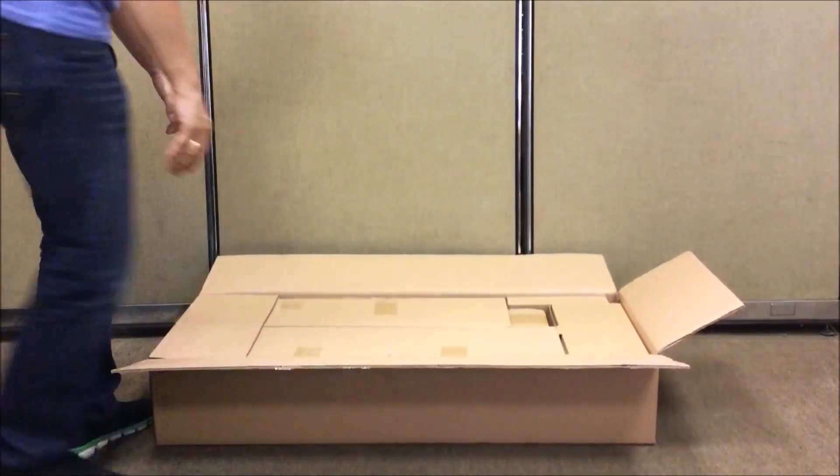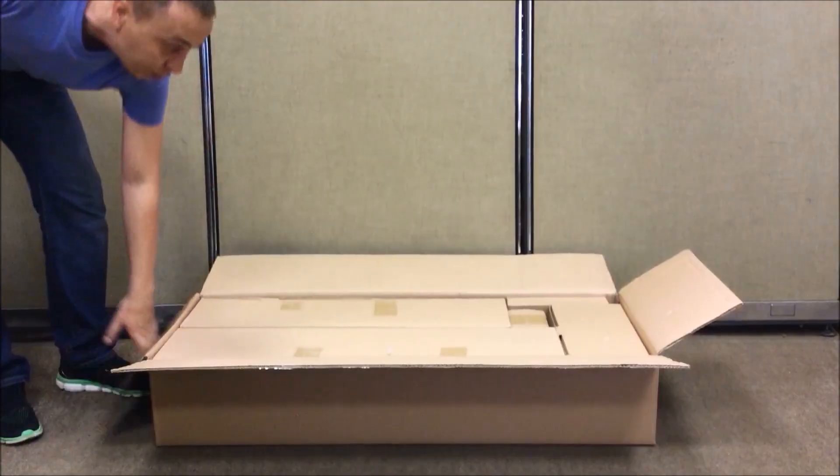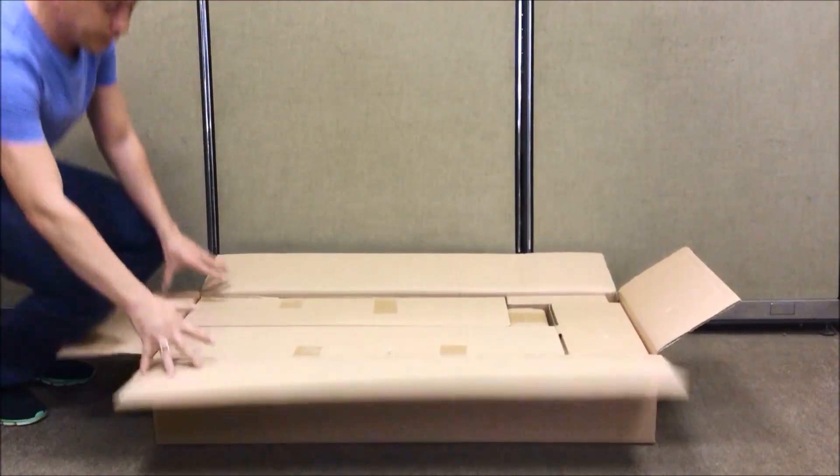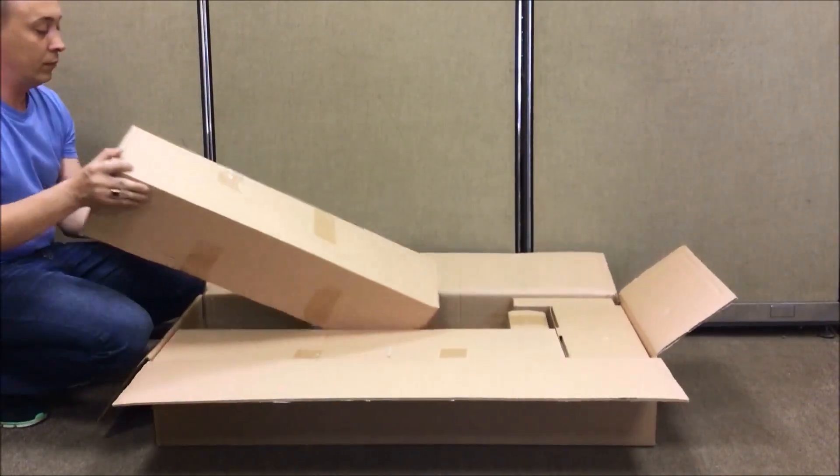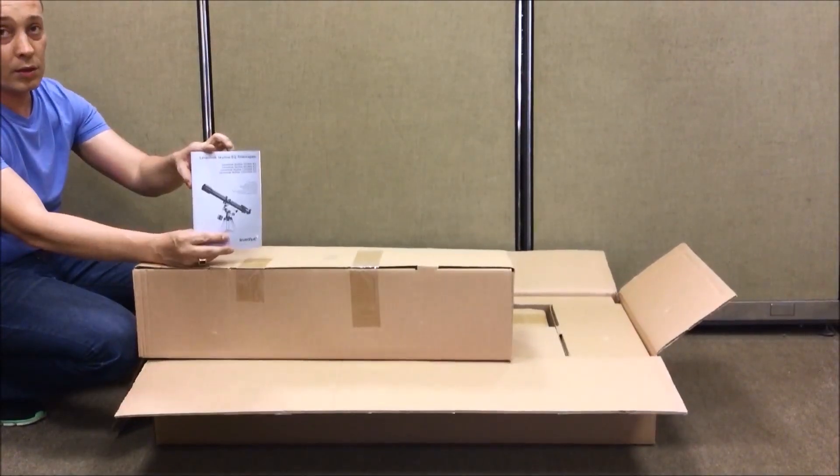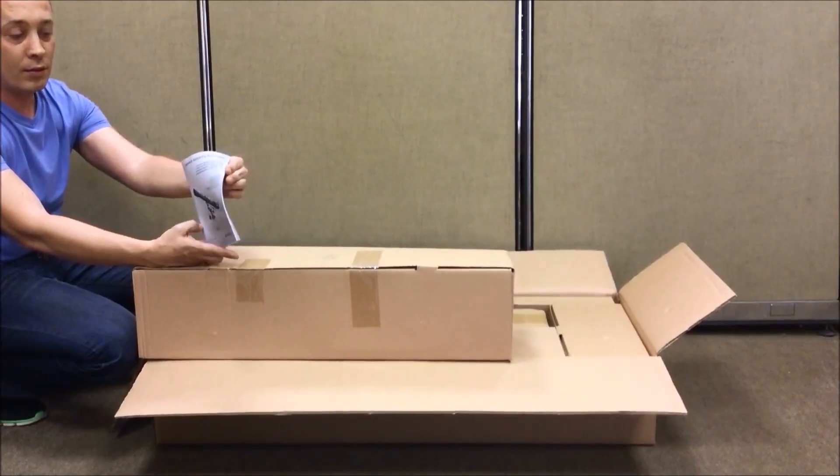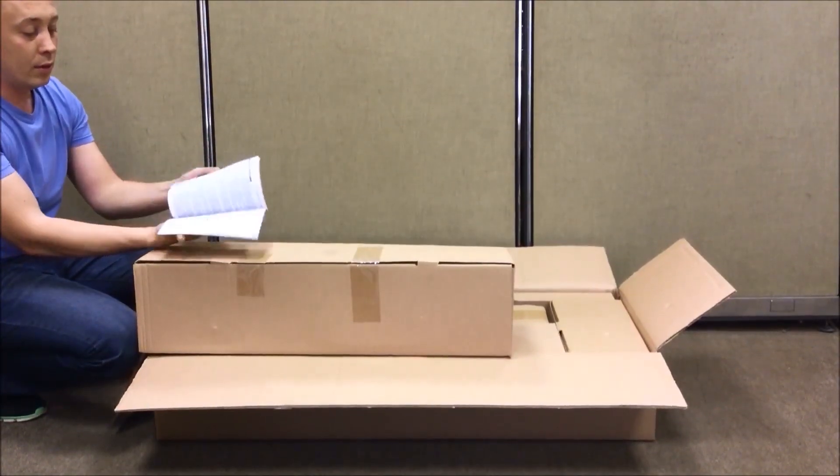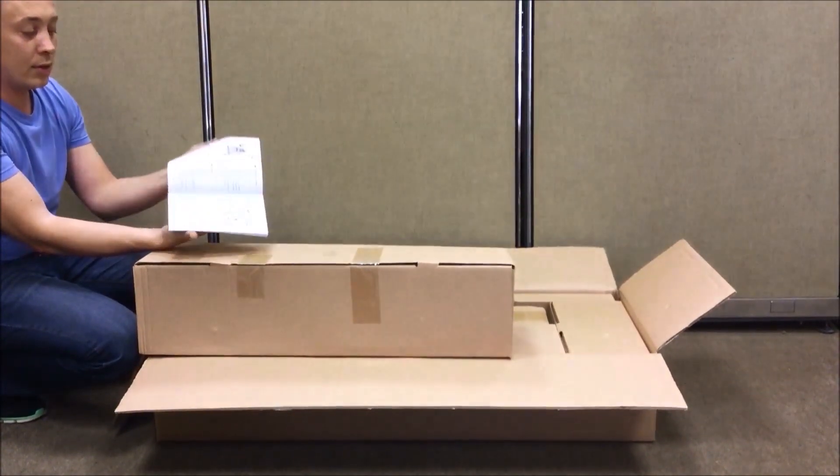The telescope comes in one large box which holds the user manual, tripod, mount, telescope tube, and accessories. All telescope parts have individual packaging inside the box. Here's the manual with pictures and detailed instructions on assembling and adjusting the telescope.